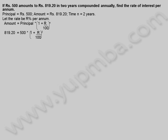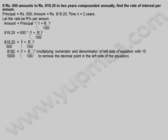819.20 is equal to 500 into 1 plus r divided by 100 whole square. 819.20 by 500 is equal to 1 plus r divided by 100 whole square. Multiplying by 10: 8192 by 5000 is equal to 1 plus r divided by 100 whole square.